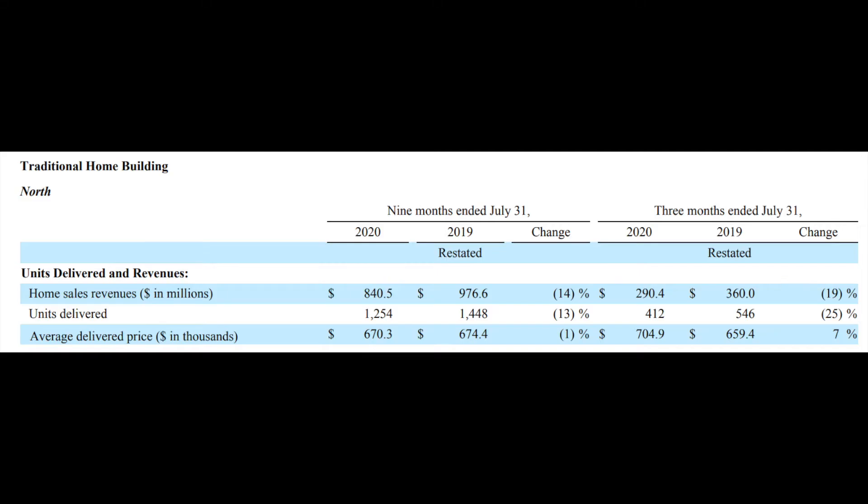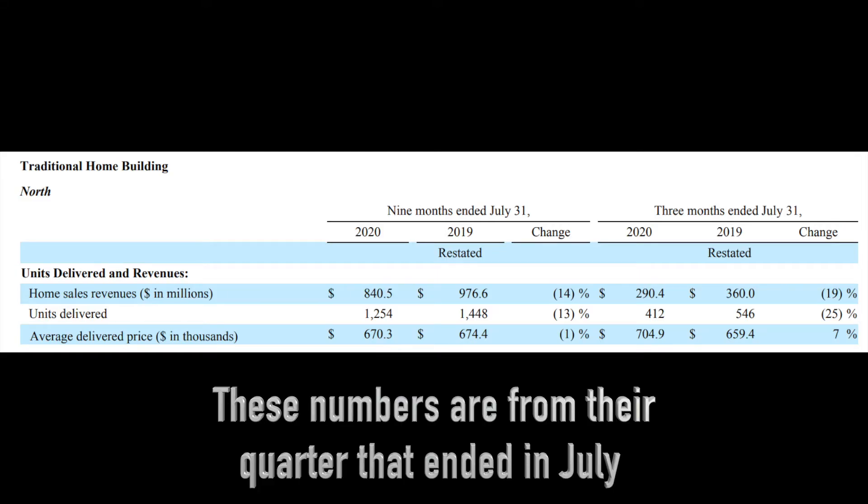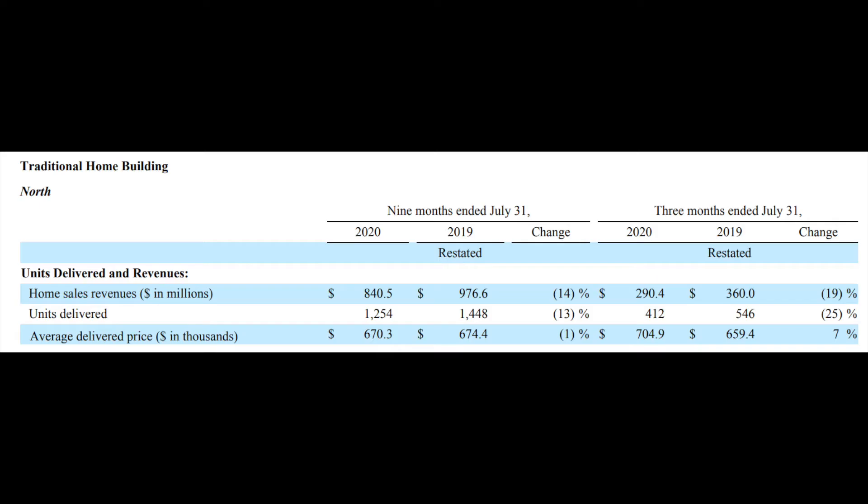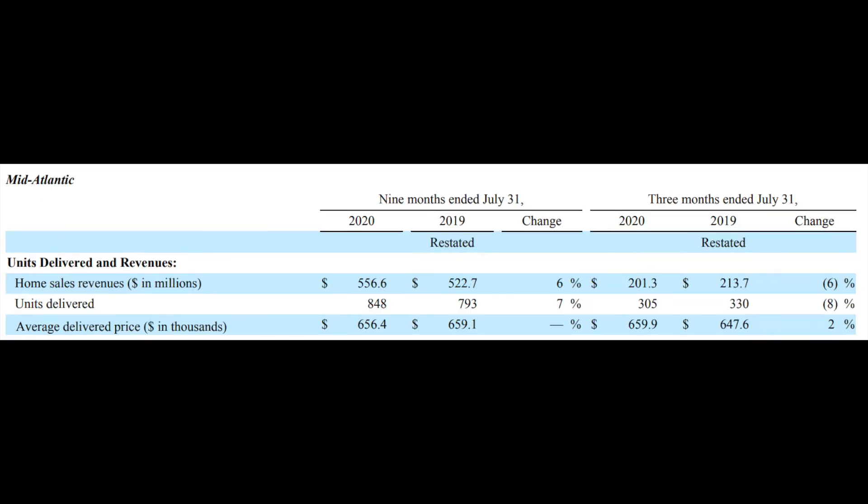We aren't going to focus too much on the backlog value of these markets, but more so the year over year units delivered. In their North market, their home revenues decreased $360 million to $290 million, which is a decline of 19%. They delivered 412 homes compared to 546, a 25% decline. And their average price of the home in this market went from $659,000 to $705,000 year over year for a 7% increase. As for the Mid-Atlantic market, they saw a 6% decline in home revenue going from $213.7 million in 2019 to $201.3 million in 2020. They delivered 330 homes in 2019 compared to 305 in 2020 for an 8% decline.